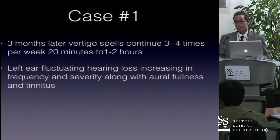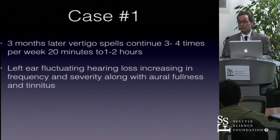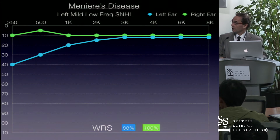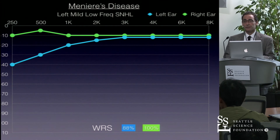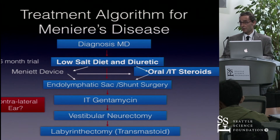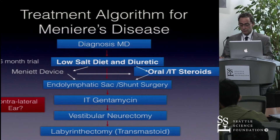Three months later, the vertigo spells continued three to four times per week, lasting 20 minutes to one to two hours. The left ear had fluctuating hearing loss with increased frequency and severity, along with aural fullness and tinnitus. The audiogram showed continued low-frequency loss. At this point, I would offer options to treat with oral prednisone or intratympanic steroid and let the patient decide.